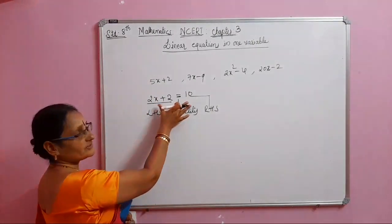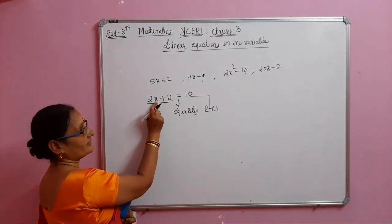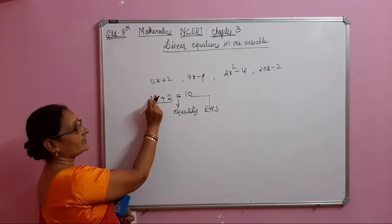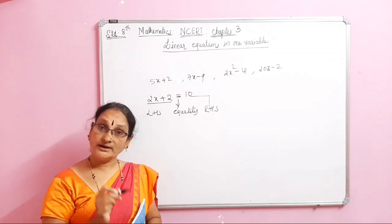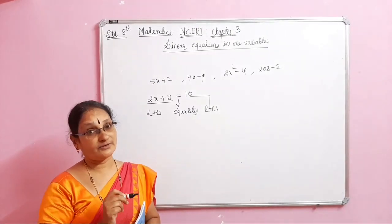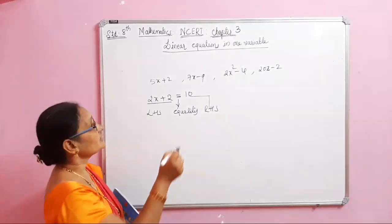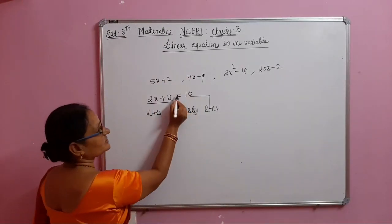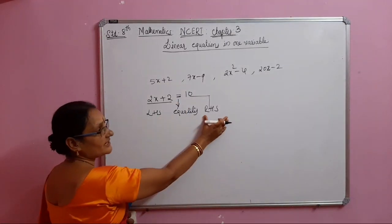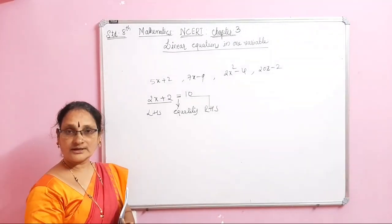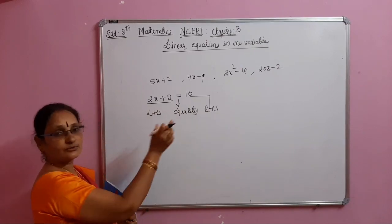We say this is a linear equation because it has only one variable of power 1. The algebraic expression with one variable of power 1 is called a linear equation. When we say equation, there must be equality — LHS and RHS — and for some suitable value both will be equal.